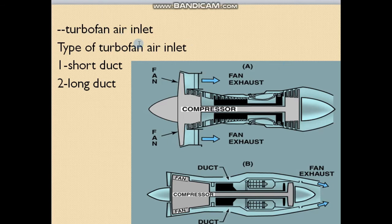The turbofan air inlet has two types. The first type is called the short duct — as we see here, the duct is short. The second type is called the long duct — as we see here, this is the long duct.